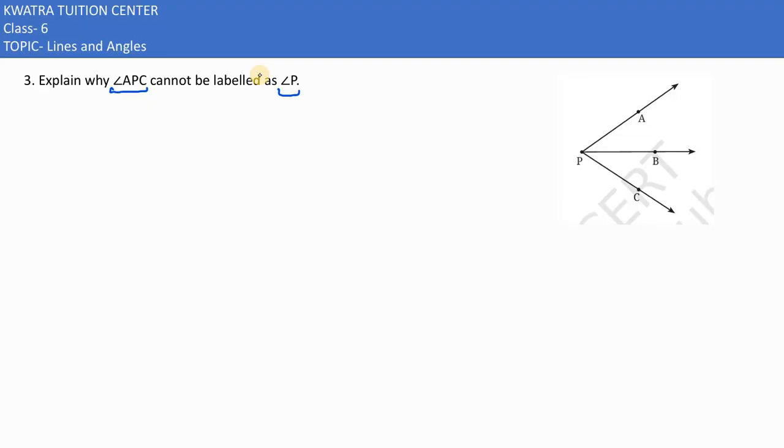You need to understand that this is not one angle. How many angles are here? If it's angle P, it means that only one angle is involved. Now in this case you can see there are more than one angle at P. That is angle APB.